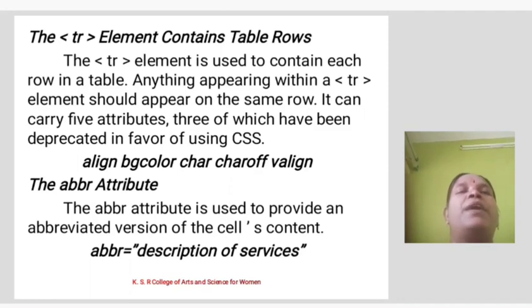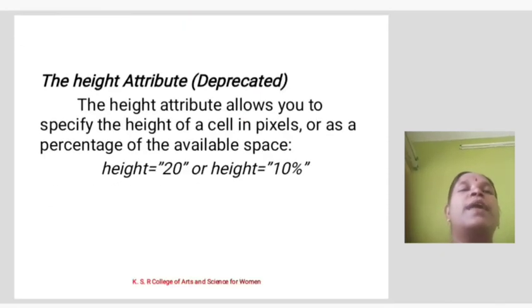The abbr attribute is used to provide an abbreviated version of the cell's content. Example: abbr equals description of the service. The height attribute (deprecated) allows you to specify the height of a cell in pixels or as a percentage of the available space. Examples: height equals 20 or height equals 10 percent.